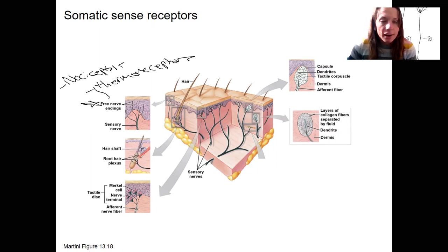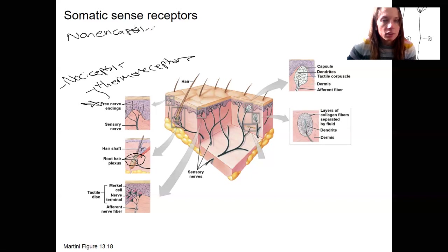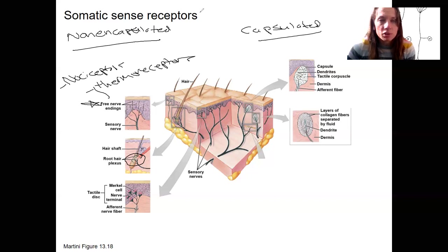Hair follicles are also wrapped around with sensory dendrites — free nerve endings that are stimulated when hairs move. On this side we have non-encapsulated receptors, and over here these are going to be encapsulated. Just to remind you, we're talking about somatic sense receptors, which are our general senses, as opposed to the special senses.